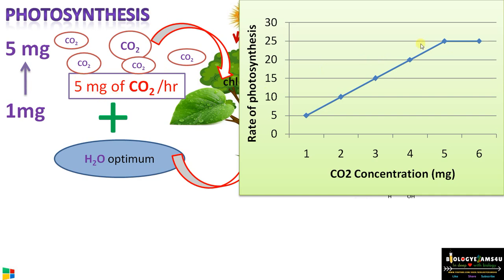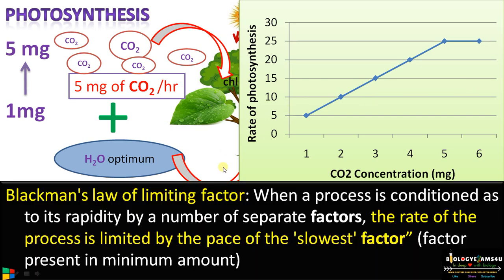Beyond 5 mg, if we keep increasing the concentration, there won't be any effect. This is Blackman's Law of Limiting Factor, which states that when a process is controlled by a number of factors, the rate of the process is limited by the pace of the slowest factor — the factor present in the minimum amount.